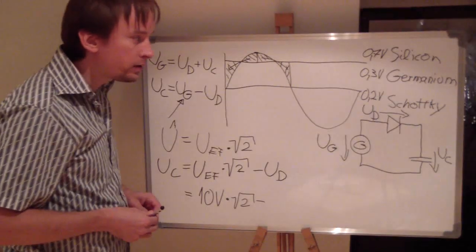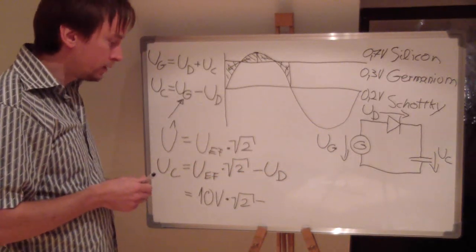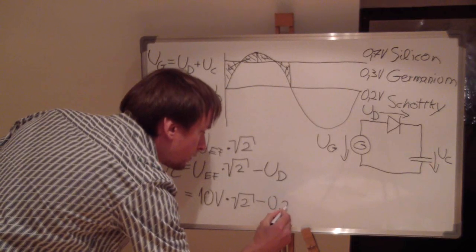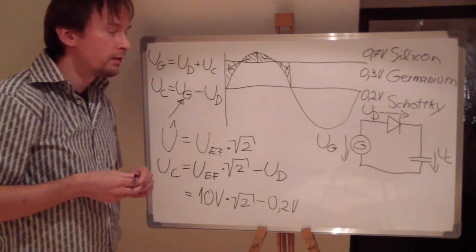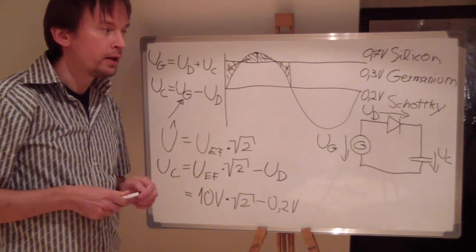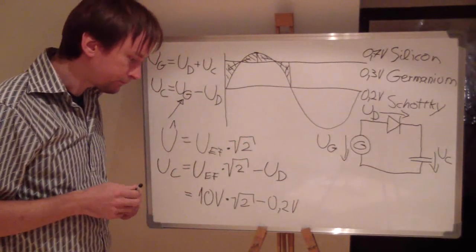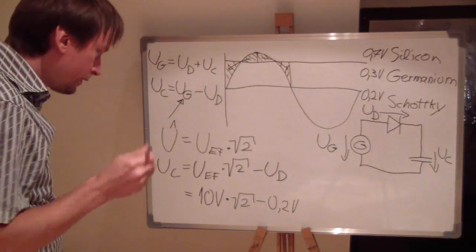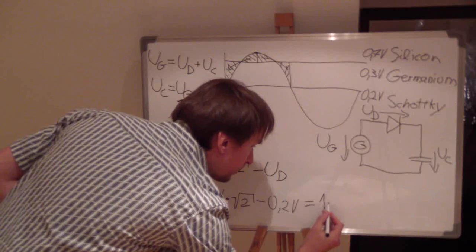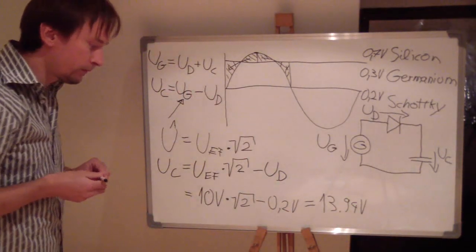The answer is we take a Schottky diode because it has the smallest voltage loss. We put in the voltage of a Schottky diode: 0.2 volts. When you want to build this voltage doubler and go buy the parts, be sure you are buying Schottky diodes and not one of the other types. This equals 13.94 volts.